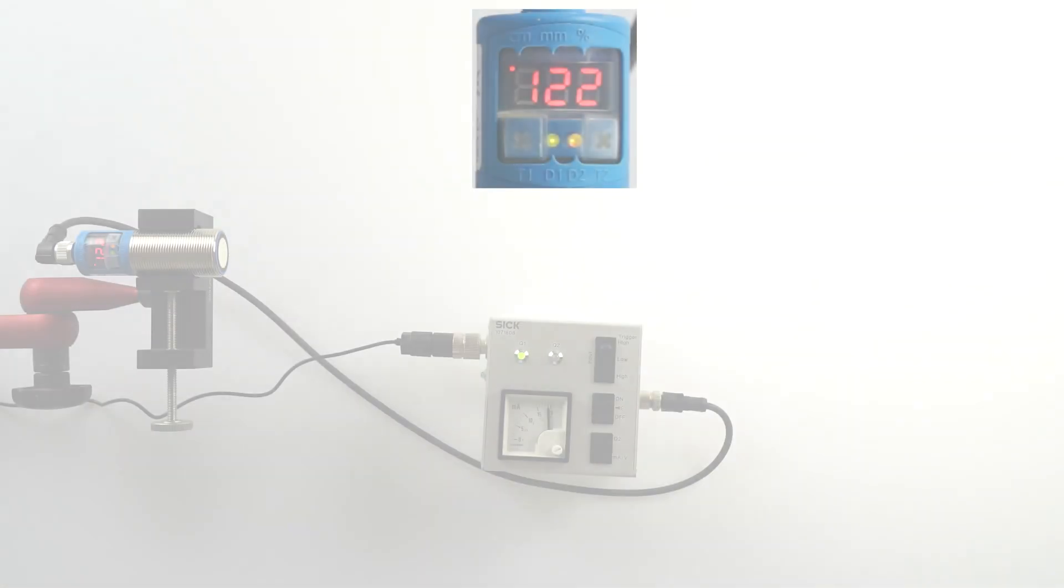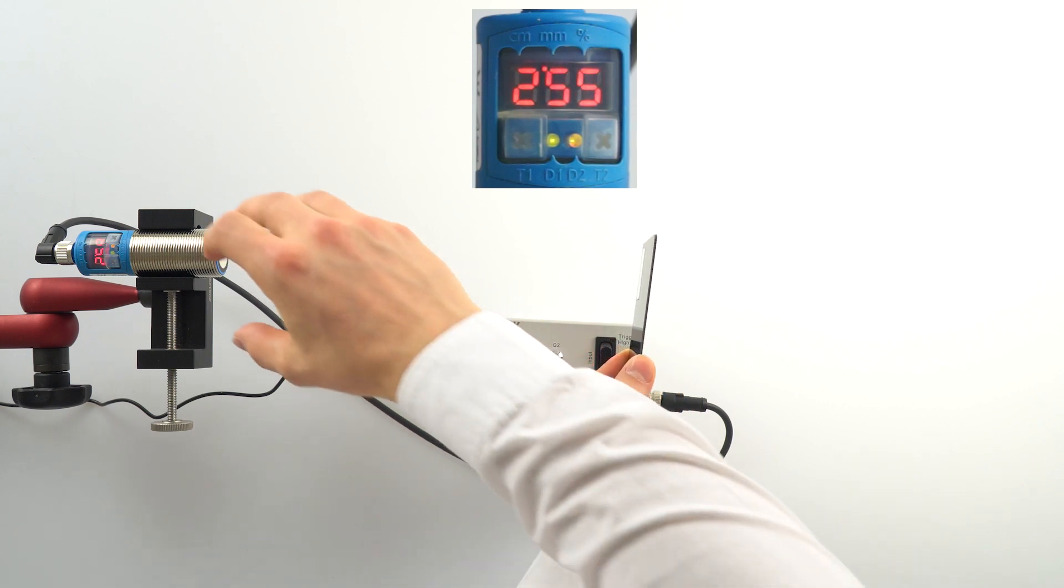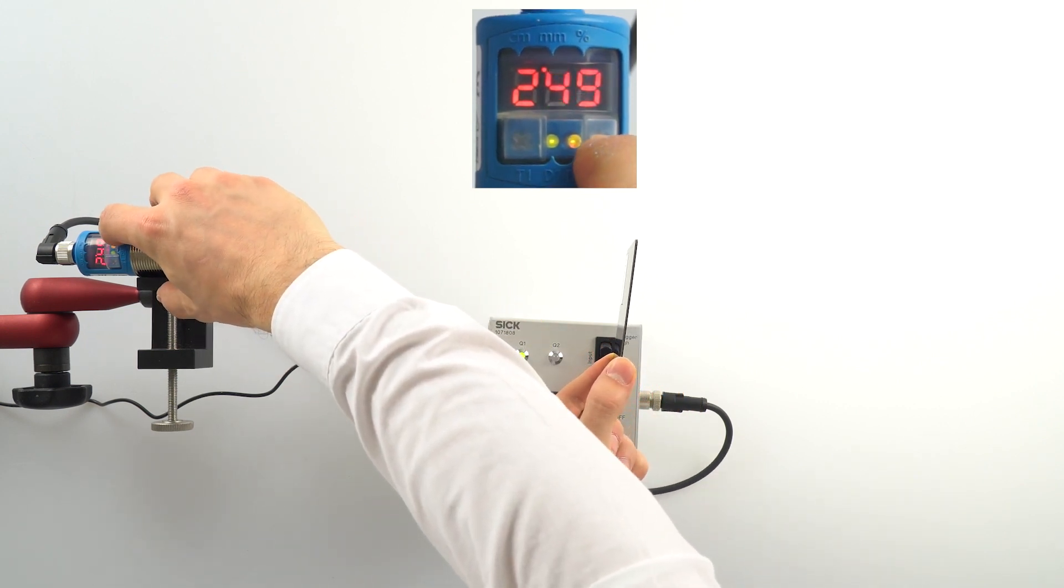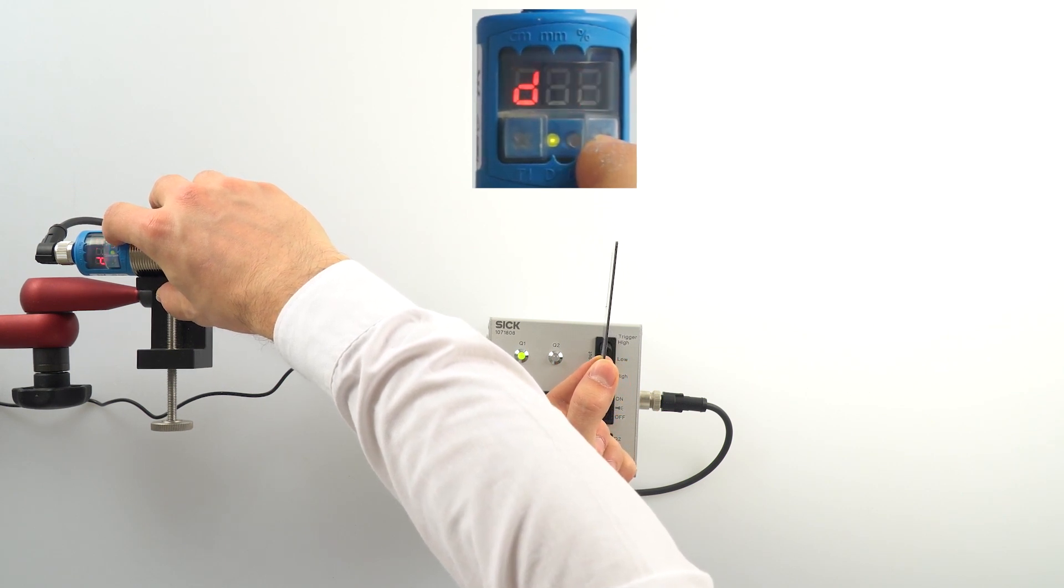Position any ultrasonic reflecting object, such as a business card, in front of the sensor at the desired distance for the limit switching point. Then press the T2 key until D appears in the display. The sensor is then showing the current measurement value.